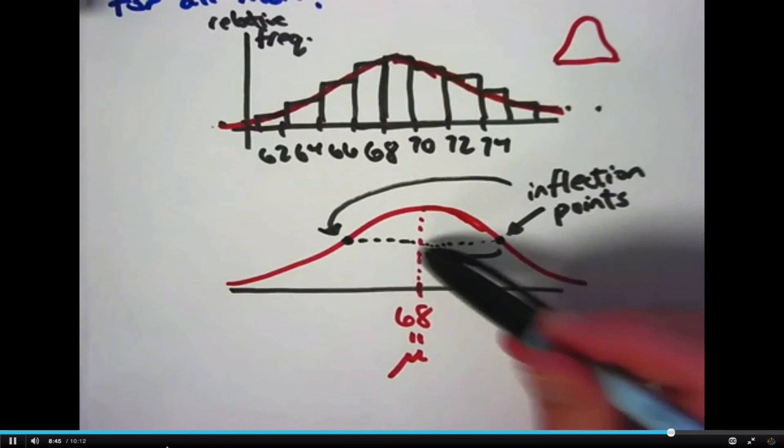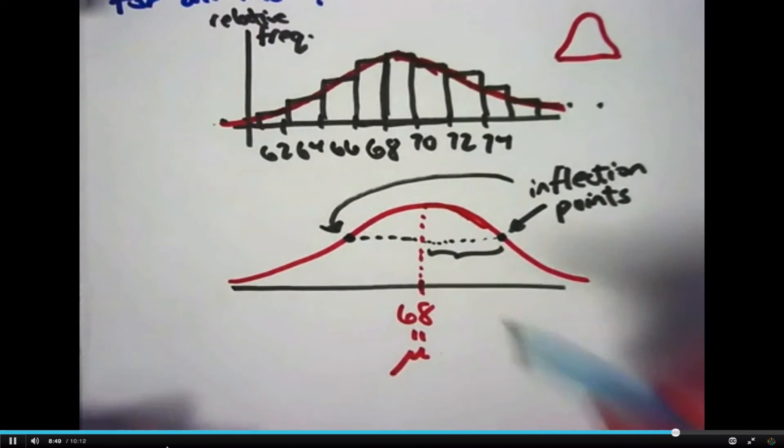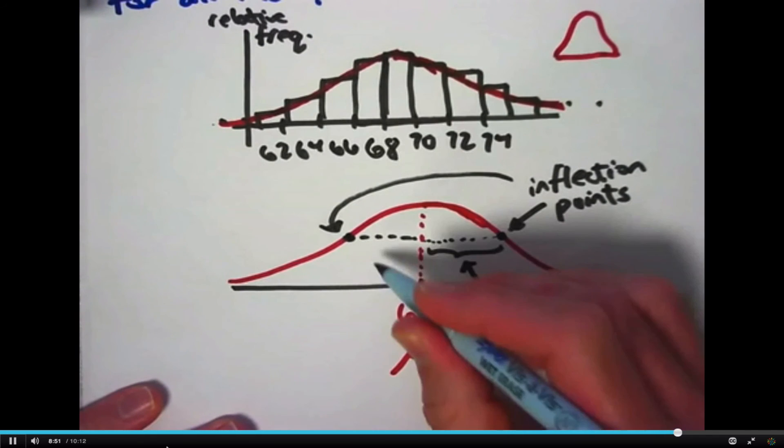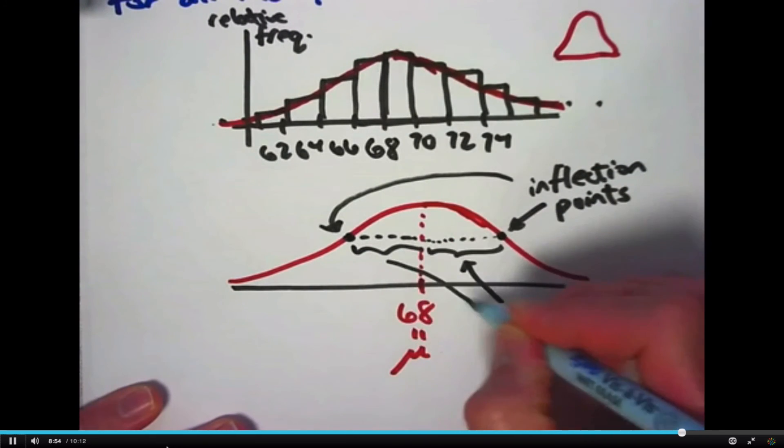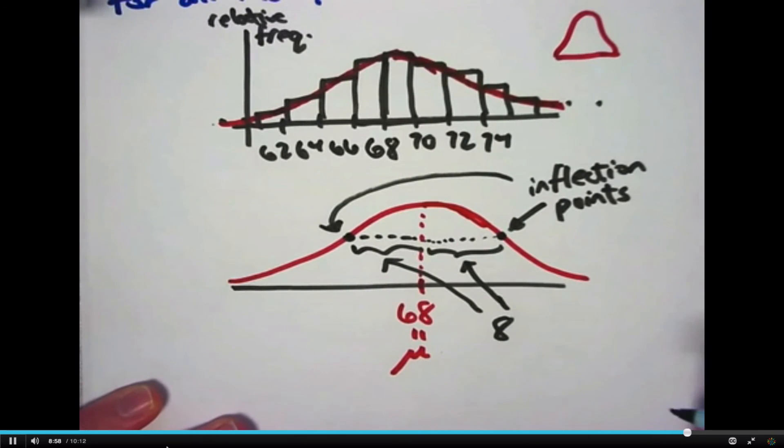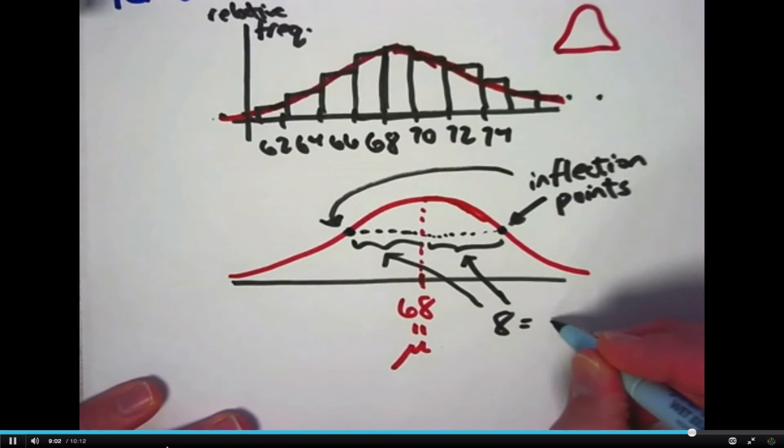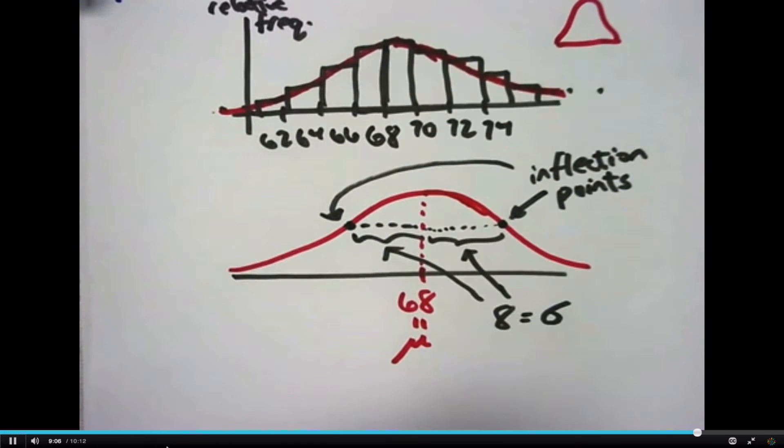And that, again, like I said, that horizontal distance there between this vertical line and either inflection point does turn out to equal the standard deviation of the distribution, 8, in our case here. A Greek letter is used for that as well. That's the small Greek letter sigma that represents that distance.